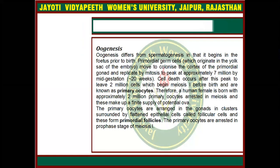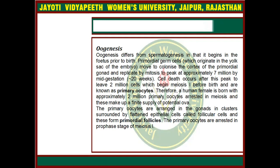Some cell death occurs after this peak, leaving 2 million cells which begin meiosis 1 before birth and are known as primary oocytes. Therefore, a human female is born with approximately 2 million primary oocytes arrested in meiosis, and these make up a finite supply of potential ova.